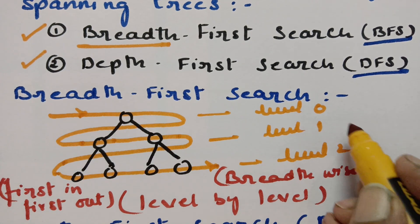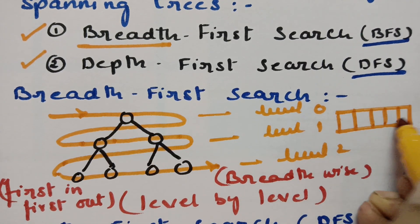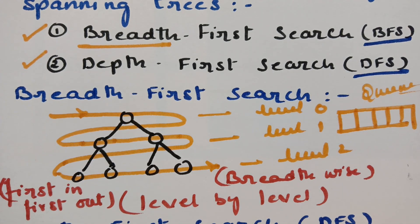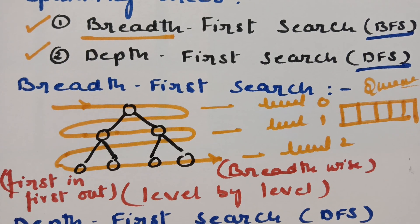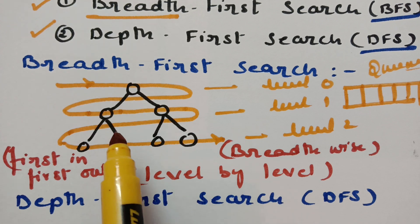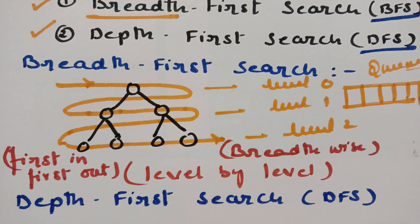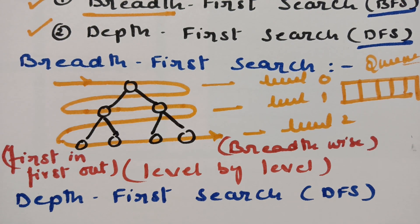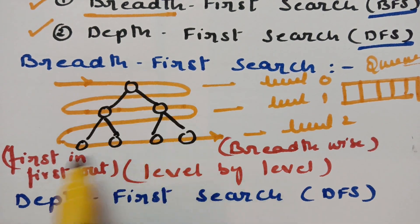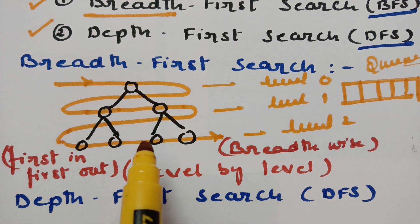In BFS we use a queue. After visiting and exploring, we add the vertex to the queue. Queue uses a first-in, first-out method. So level by level, using the broad way, is the traversal method used in BFS, and this algorithm is very helpful for constructing spanning trees.